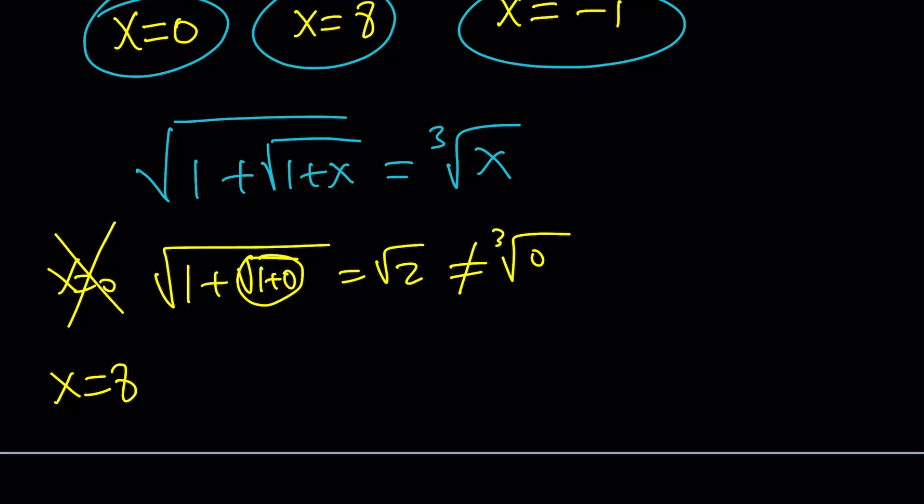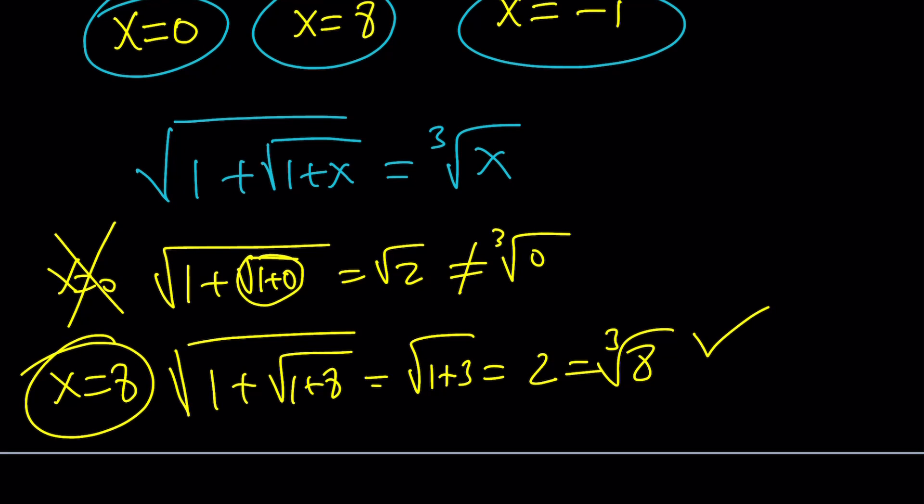X equals 8: square root of 1 plus the square root of 1 plus 8. 1 plus 8 is 9, the square root of 9 is 3. This is square root of 1 plus 3, which equals 2. And cube root of 8 is also 2. So x equals 8 works. This didn't, but x equals 8 did.